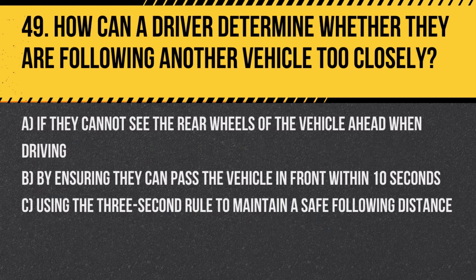Question 49: How can a driver determine whether they are following another vehicle too closely? A. If they cannot see the rear wheels of the vehicle ahead when driving. B. By ensuring they can pass the vehicle in front within 10 seconds. C. Using the 3-second rule to maintain a safe following distance. Answer: C. Using the 3-second rule to maintain a safe following distance. This rule helps ensure there is enough time to react and avoid collisions.